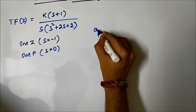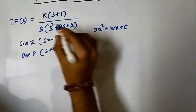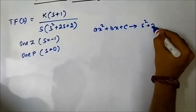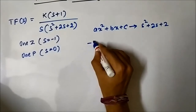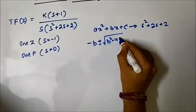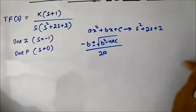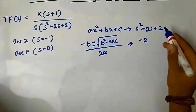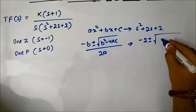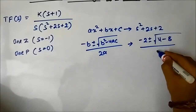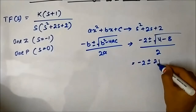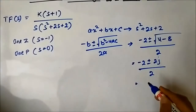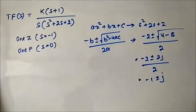This is in the form of a quadratic equation ax²+bx+c, so s²+2s+2. The roots are calculated by the formula: minus b plus-or-minus sqrt(b²−4ac) all over 2a. Here it gives minus 2 plus-or-minus sqrt(4−8) over 2, which equals minus 2 plus-or-minus 2j over 2, giving s = minus 1 plus-or-minus j. This is the complex pole.